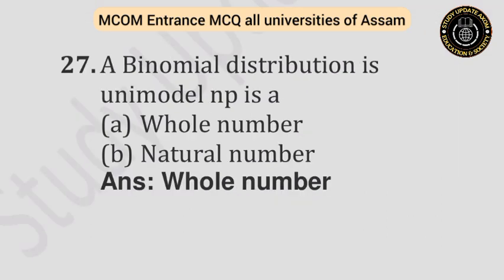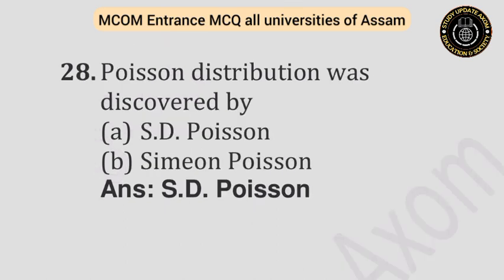Question number twenty-seven: A binomial distribution is unimodal when NP is — Option A: A whole number. Option B: A natural number. Answer is a whole number. Question number twenty-eight: Poisson distribution was discovered by — Option A: S.D. Poisson. Option B: Simon Poisson. Answer is S.D. Poisson.